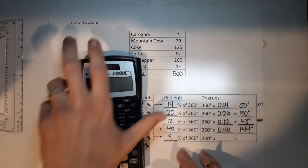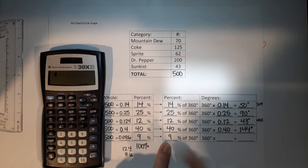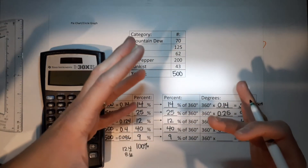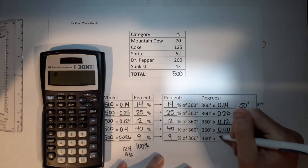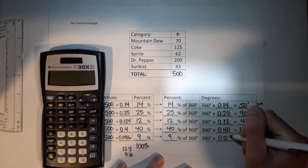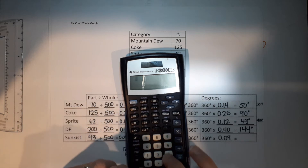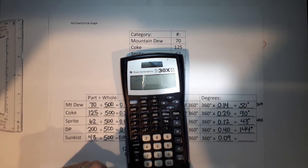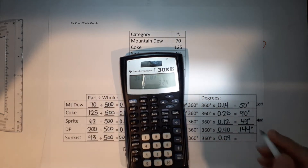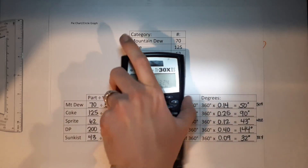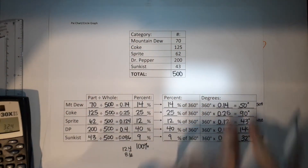Sunkissed: 9% of 360. Be careful not to multiply by 0.9 — that would give 90 and be way too big. We want 9%, so multiply by 0.09. 360 times 0.09 gives 32.4, which rounds to 32 degrees.